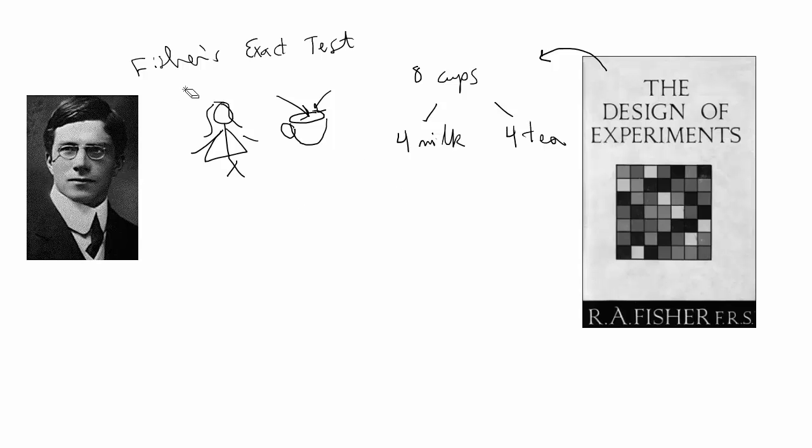So it was a small test, and you'll see it's not a very powerful test at all. The results of this test could be written out in a 2x2 contingency table, where you're trying to test whether there's any relationship between what was poured first, either the milk or the tea, and what her guess was first, either milk or tea.